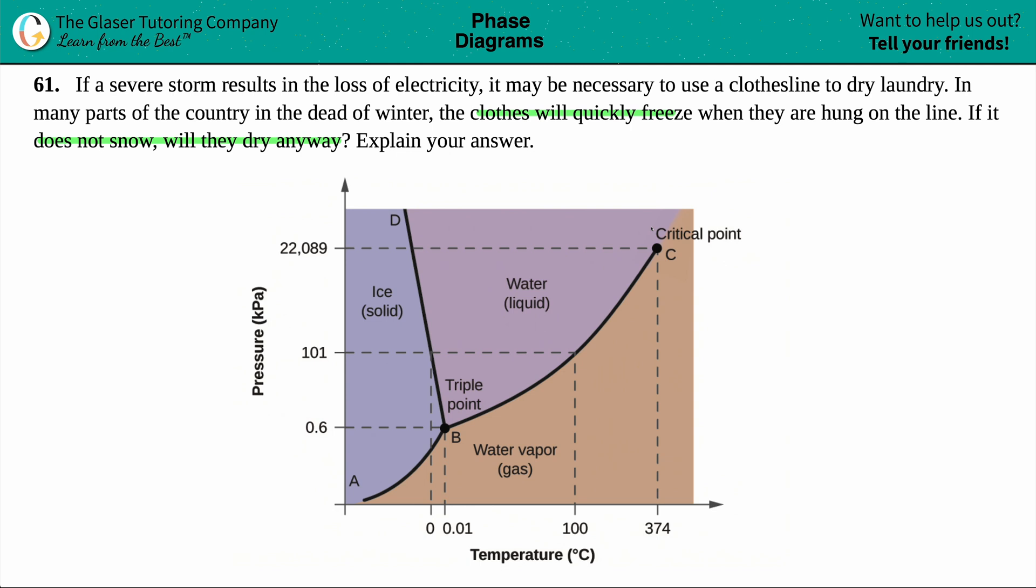All right. So no electricity here. We need those clothes to be absolutely dry. So will they dry in the dead of winter? Well, we're talking about water here, or H2O, because what is coming down from the sky? It's either in snow form, rain form, right? So that's H2O. Now in this case, the question is basically saying in many parts of the country in the dead of winter, the clothes will quickly freeze.